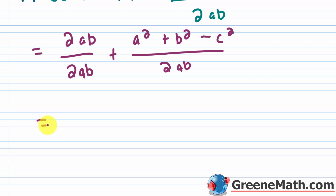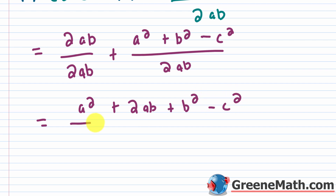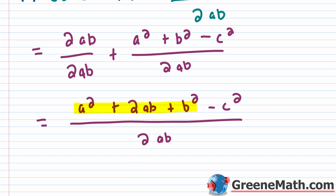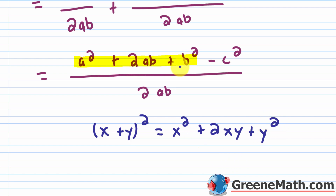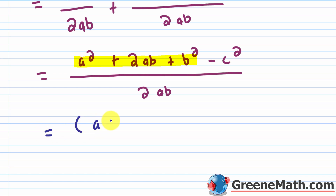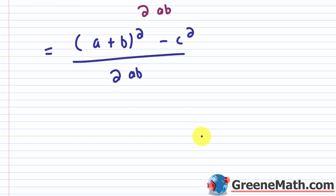Combining the numerator in a specific order to factor, we get A squared plus 2AB plus B squared minus C squared, all over 2AB. The pattern A squared plus 2AB plus B squared is a perfect square trinomial — it equals the quantity A plus B, squared. So the numerator becomes the quantity A plus B squared minus C squared, over 2AB.